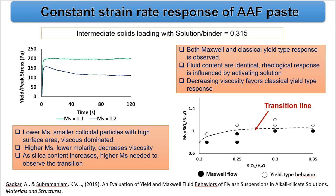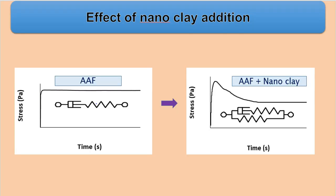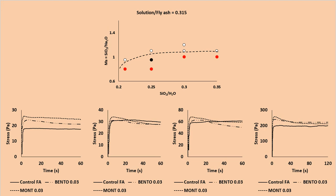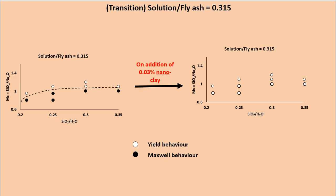Maxwell type of response was observed for paste with lower silica modulus for the same solution-to-binder ratio. But after addition of nanoclay to the paste which exhibited Maxwell type of response, there was a transition in the type of rheological response and it exhibited yield type of response. For all the alkali activated fly ash pastes in the case of intermediate solids loading which exhibited Maxwell type of response, after adding the nanoclay we observed the change in behavior. Thus, in the entire range studied, no paste after adding nanoclay exhibited Maxwell type of behavior — even in case of solids loading of 0.33, 0.35, and 0.4, this transition in the type of rheological response was observed.